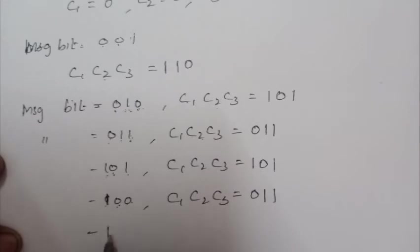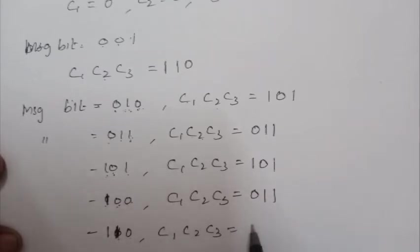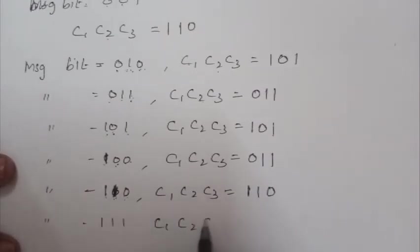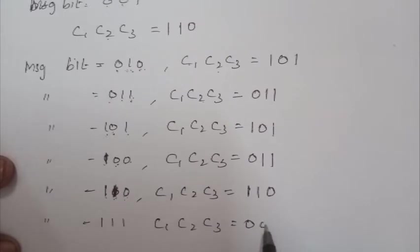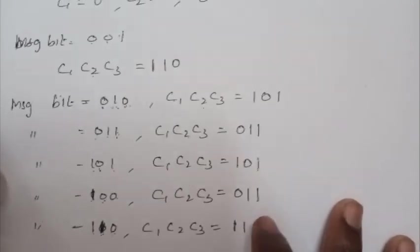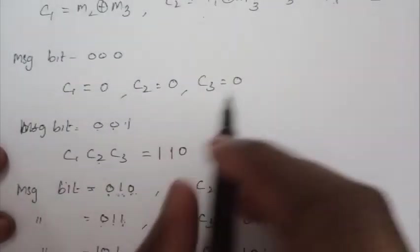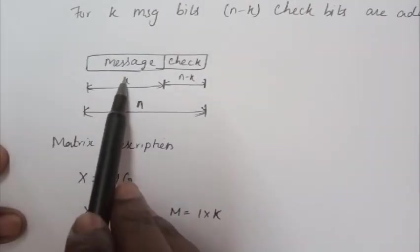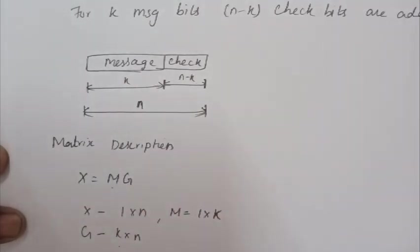For message 111, using c1=m2⊕m3=1⊕1=0, c2=m1⊕m3=1⊕1=0, c3=m1⊕m2=1⊕1=0. Now the code vector is the combination of message bits and check bits. For message 000, the code vector is 000 000. For message 001, the code vector is 001 110.